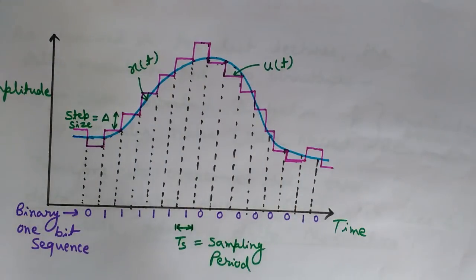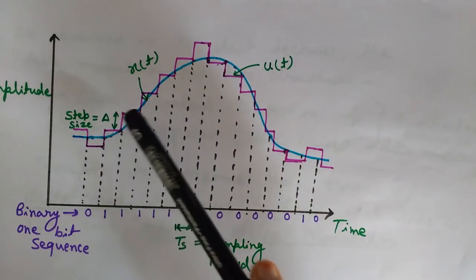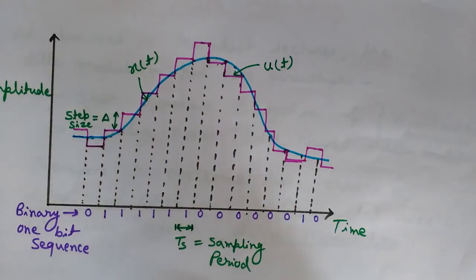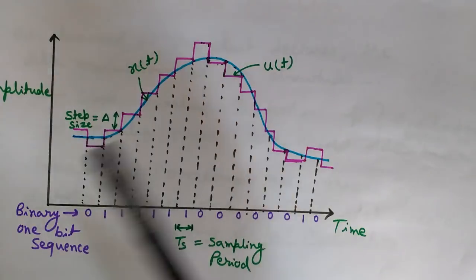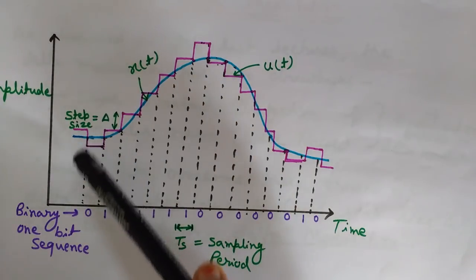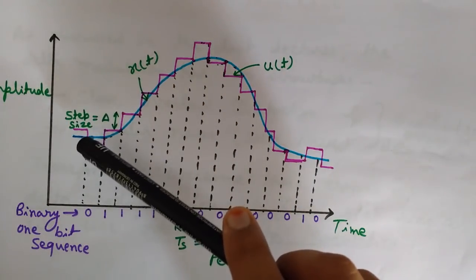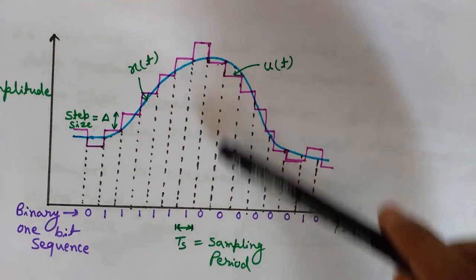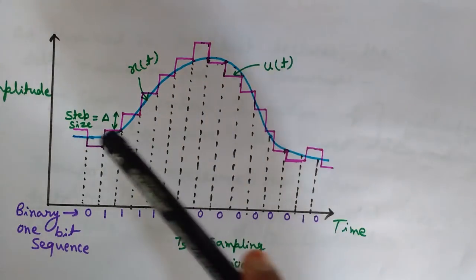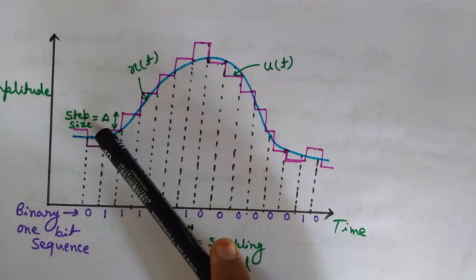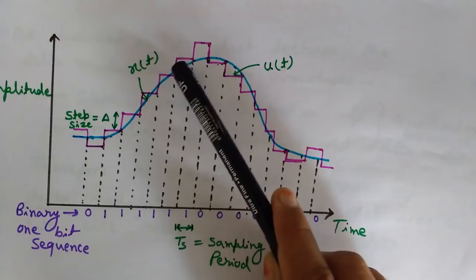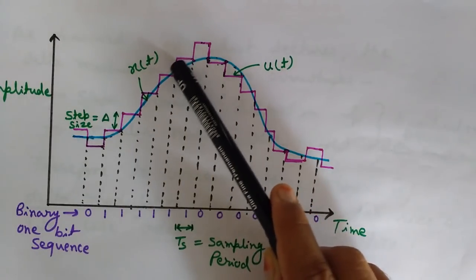What we do here is approximate this analog waveform with a staircase-like waveform in pink. One important thing to observe here: this is the delta modulation waveform, not the adaptive delta modulation waveform. In delta modulation, we cut this waveform into samples using these vertical black lines, and between these two vertical black lines is the blue sampled part.